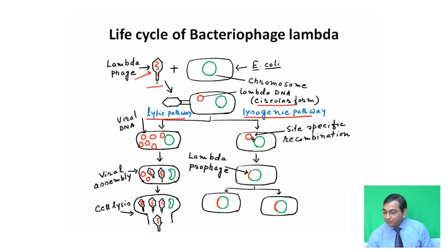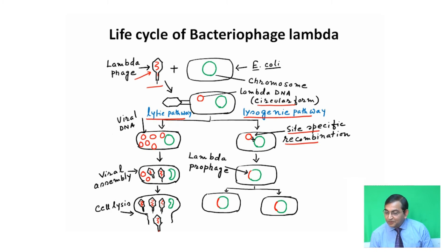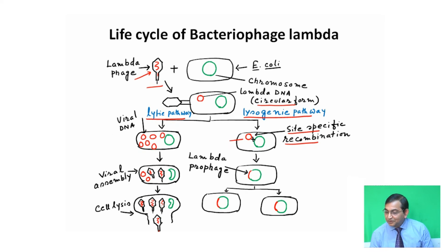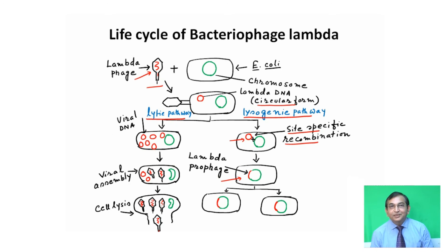In the lysogenic pathway, by site-specific recombination, lambda phage DNA recombines with the host DNA and a lambda prophage is formed. This lambda prophage then further replicates and passes on to other cells.